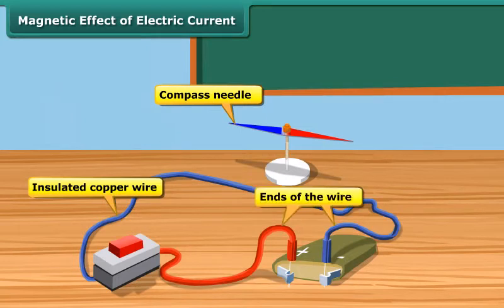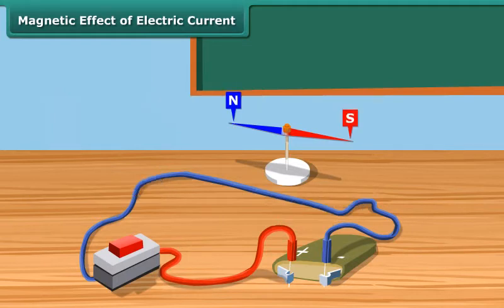Connect the two ends of the wire to a battery. When no current is flowing in the wire, the magnetic needle is parallel to the wire and points in the usual north-south direction.